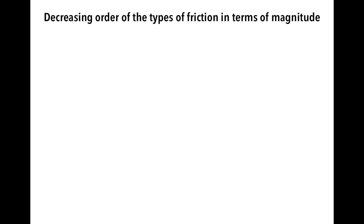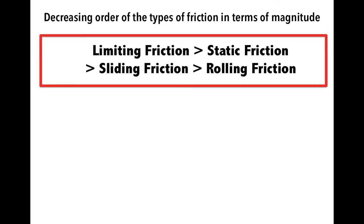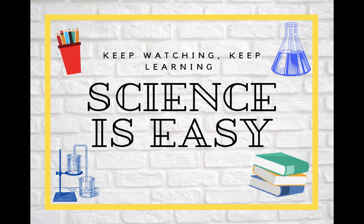It is important to know the decreasing order of types of friction in terms of magnitude: limiting friction has the most magnitude, then static friction, sliding friction, and rolling friction. That's it for this video. Keep watching, keep learning, because science is easy.